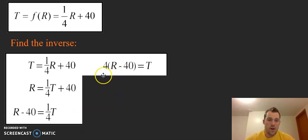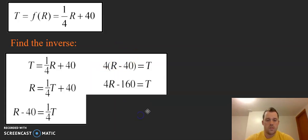We can easily distribute this through, so T equals 4R minus 160. And our last step is to change this variable back to function notation, so it's going to be f inverse of R equals 4R minus 160.